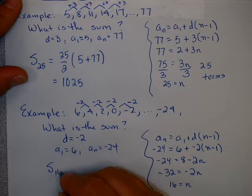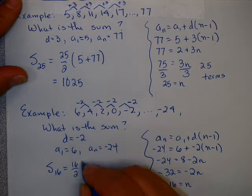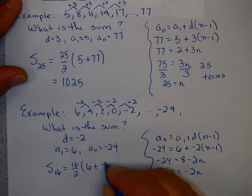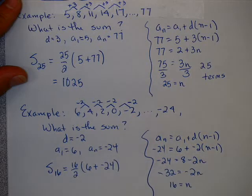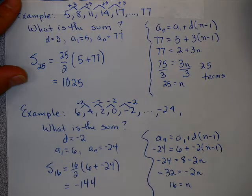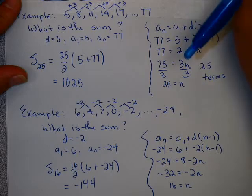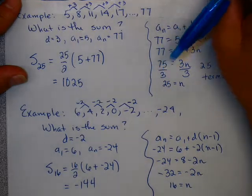The sum of the first 16 terms, therefore, is 16 divided by 2 times the first term plus the last term. Notice this sum is probably negative. That's going to give you 16 divided by 2 times negative 18. I end up with minus 144 as my solution. So that is how you find the sum of the terms of an arithmetic sequence.